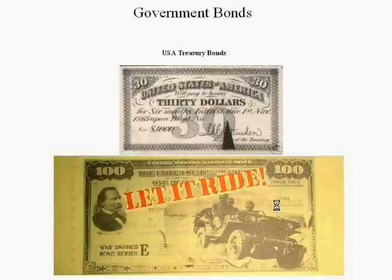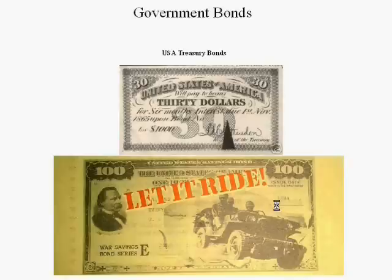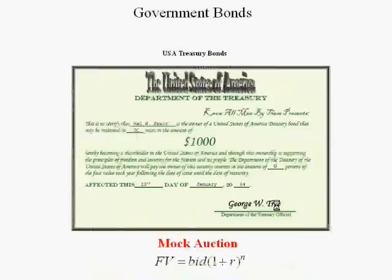You give the government money today to cover a budget deficit, and then in five or ten years — whatever the maturity is — they'll give you back the face value. The war bond on the bottom is a $100 face value bond. So maybe you bought it for $80, and then three or four years later the Treasury gives you $100. It's kind of like Wimpy: I'll gladly pay you Tuesday for a hamburger today. They're like promissory notes in the game of life.